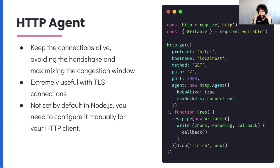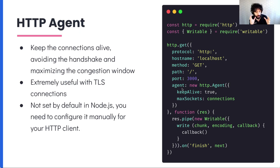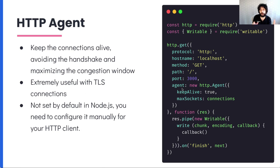This is actually critical for TLS connections, because on top of the TCP handshake, you will also have the TLS handshake. So if you don't have an agent and you're calling HTTPS services, you are setting yourself up for trouble. Note that this is not the default, so you need to either configure it manually for your HTTP client or set it as a default in Node. The difference can be staggering.